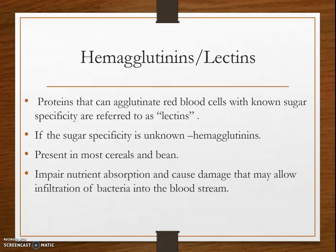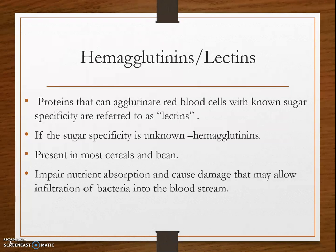The next anti-nutritional factor is hemagglutinins or lectins. Lectins are proteins that can agglutinate red blood cells with non-sugar specificity. Proteins that agglutinate red blood cells but whose sugar specificity is unknown are referred to as hemagglutinins. These hemagglutinins or lectins are present in most cereals and beans. They impair nutrient absorption and cause damage that may allow infiltration of bacteria into the bloodstream.